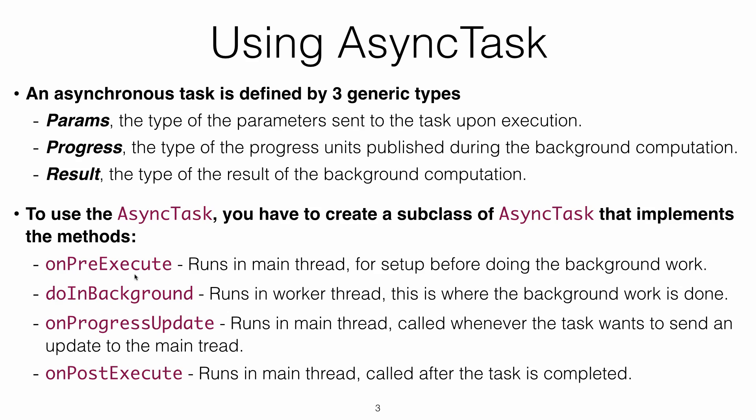While doInBackground is performing its tasks, it can update the main thread through a method called publishProgress. When the background thread sends a message using publishProgress, that message is received in the onProgressUpdate method, which runs in the main thread.